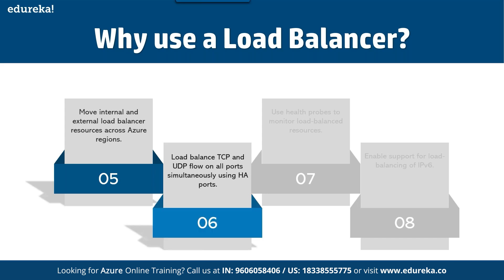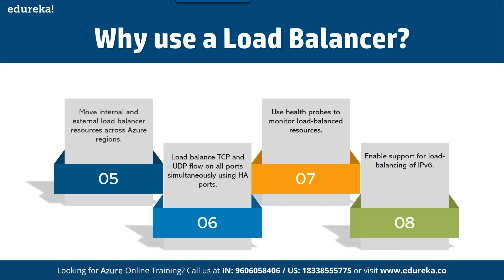You can load balance TCP and UDP flows on all ports simultaneously using HA ports. HA is basically a cluster. TCP is a reliable protocol where you get an acknowledgement whether your packet was received or not; UDP is not reliable — no acknowledgement is returned. You should also use health probes to monitor load-balanced resources, and enable support for load balancing of IP-based flows.